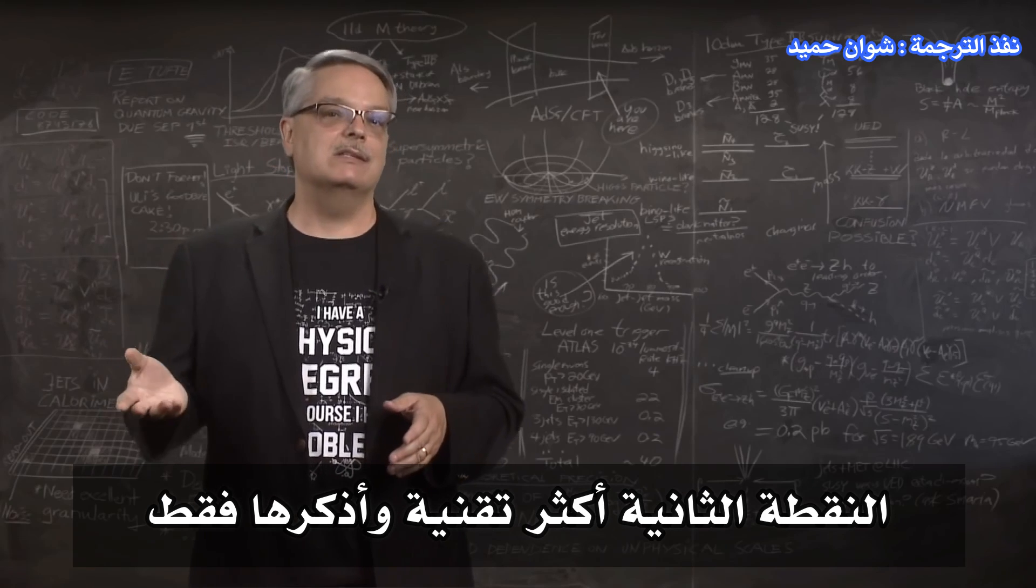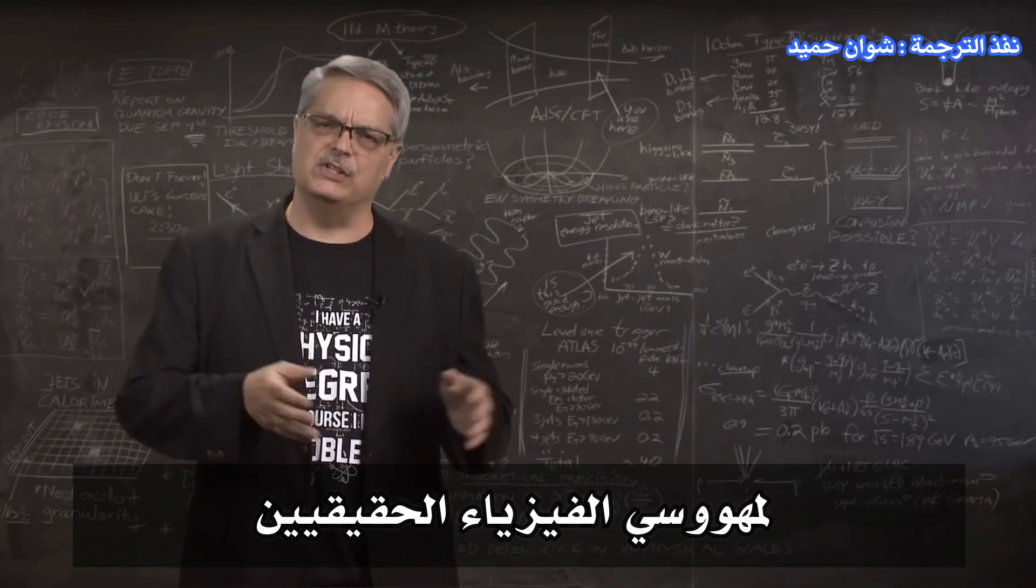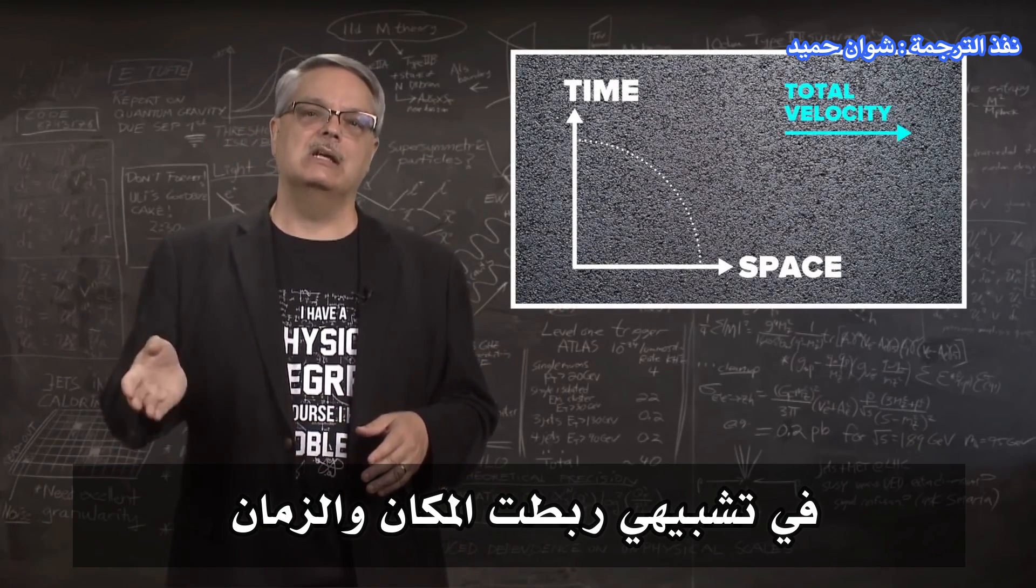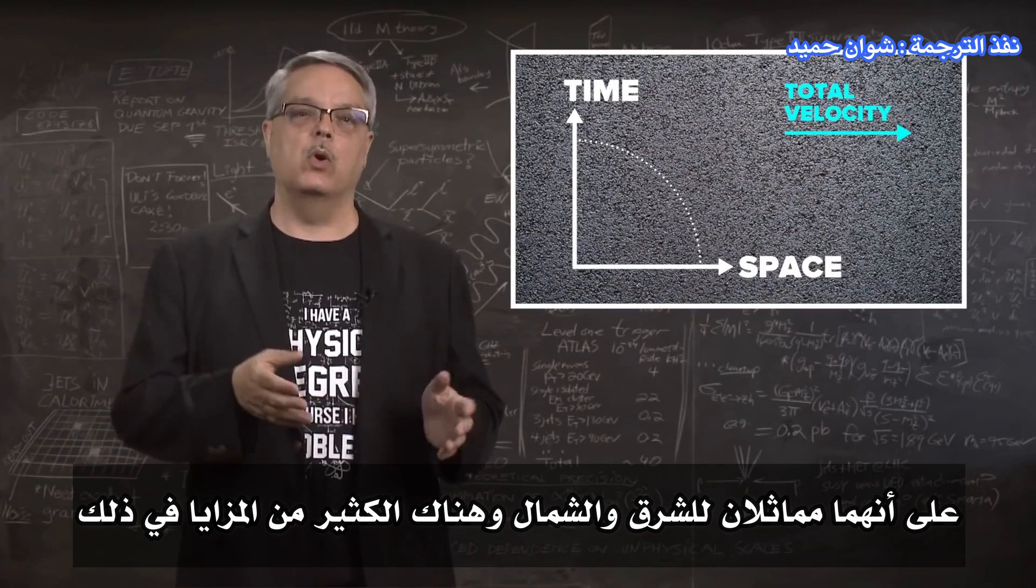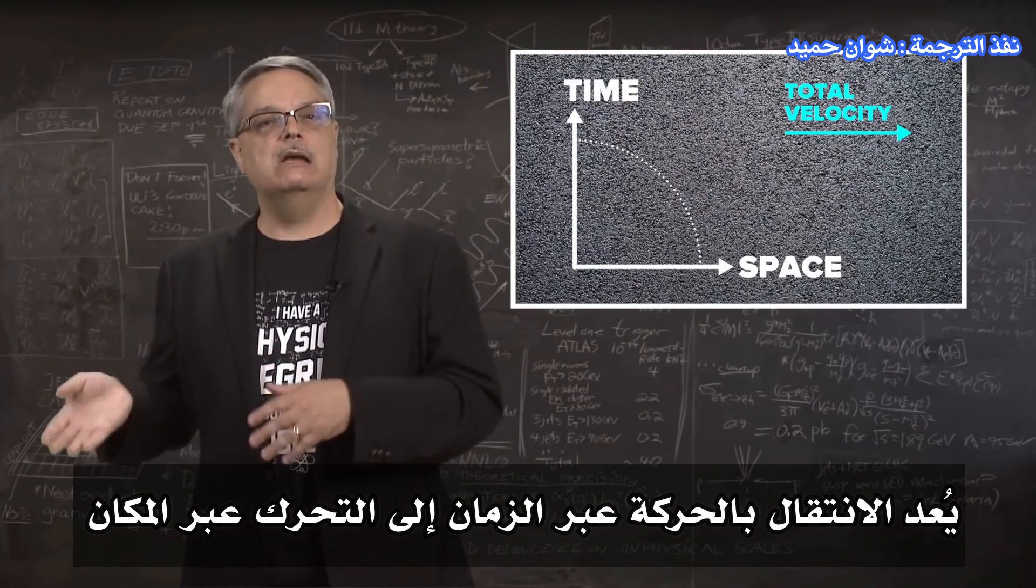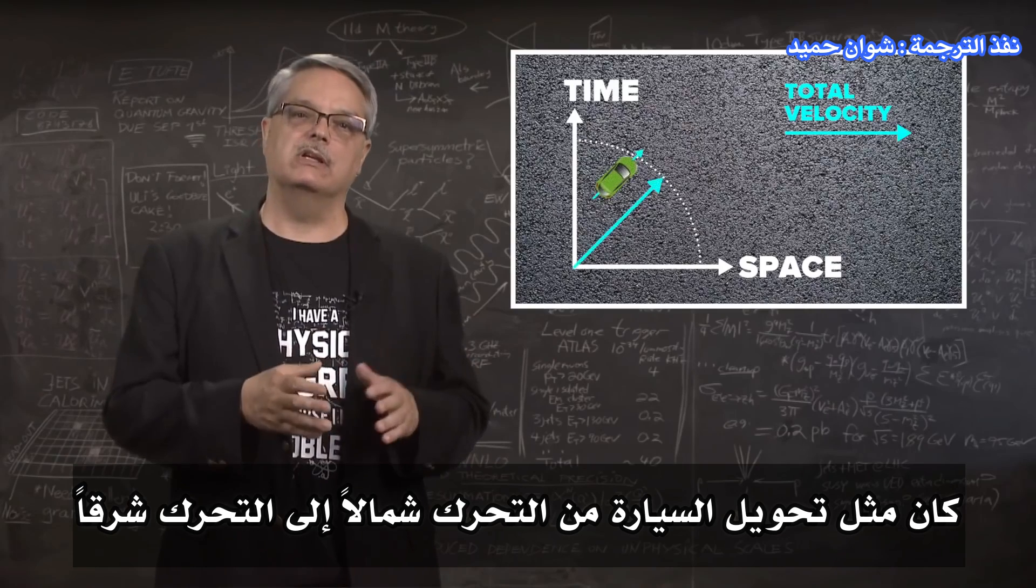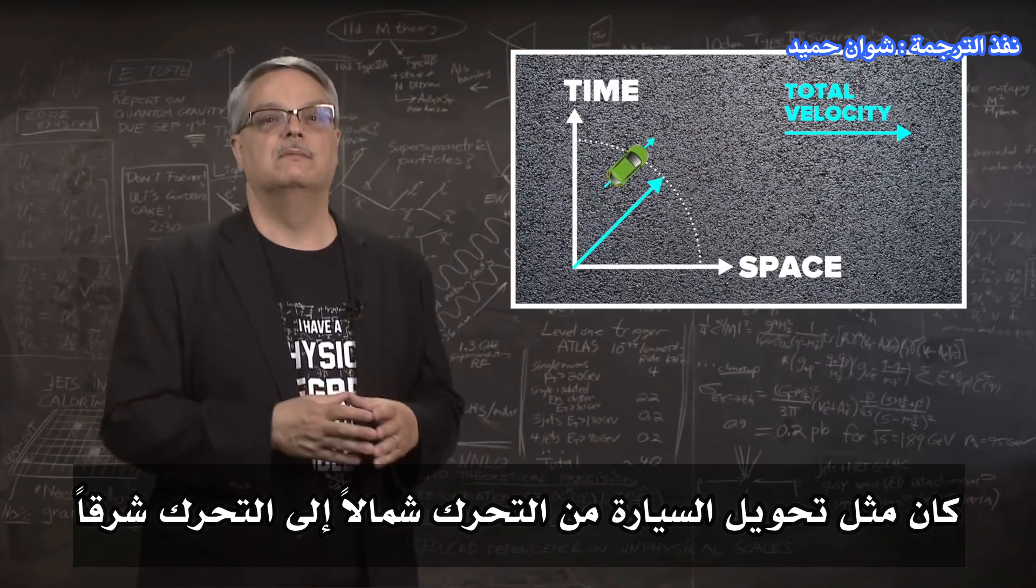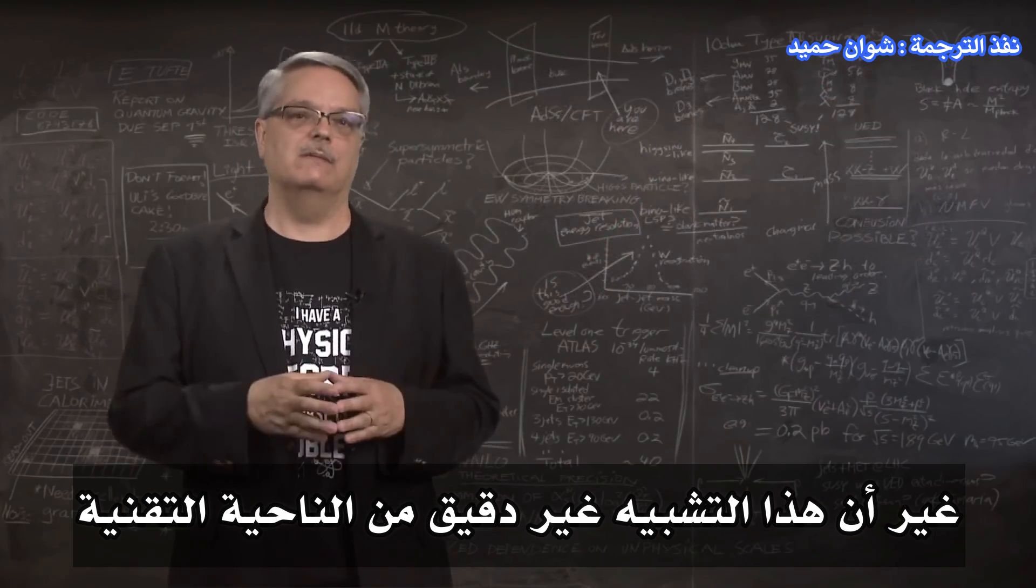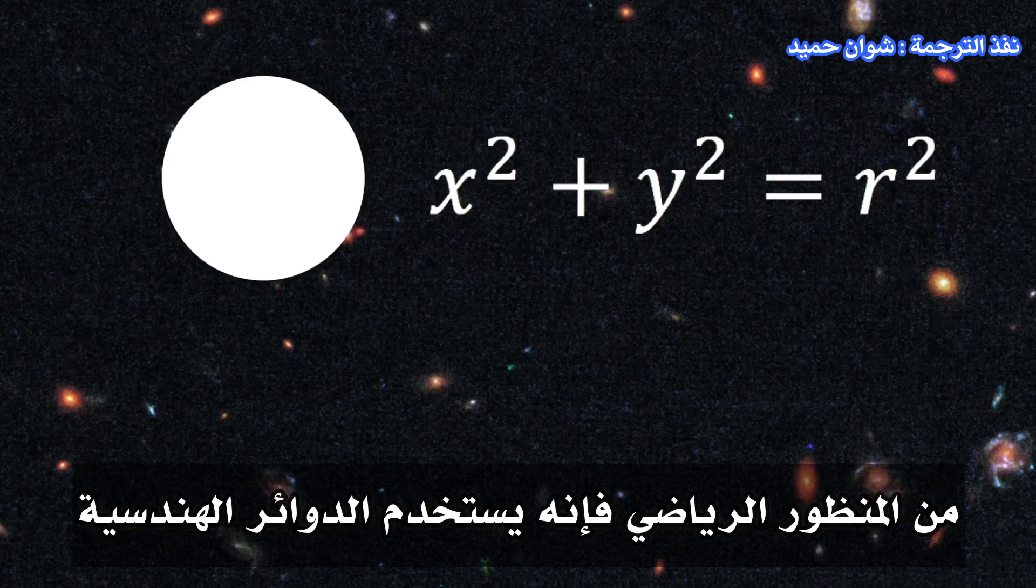The second point is more technical, and I mention it only for the real physics nerds. In my analogy, I connected space and time as being similar to east and north, and there's a lot of merit in that. Morphing from motion through time to motion through space was like turning a car from moving north to moving east. However, this analogy is technically inaccurate.